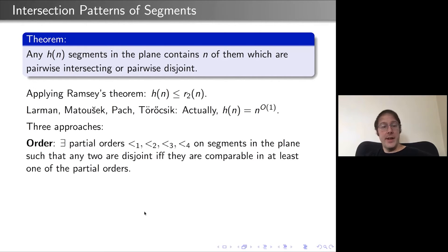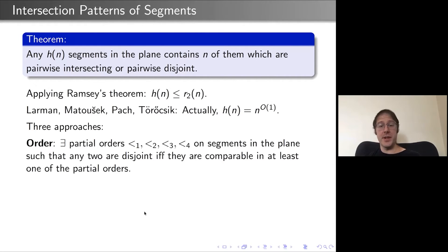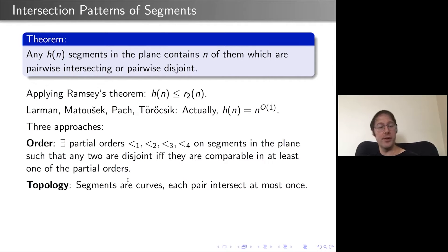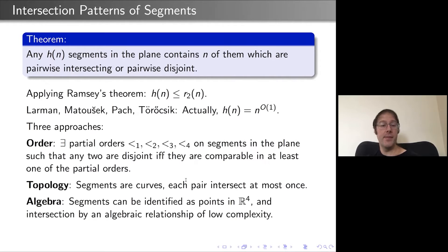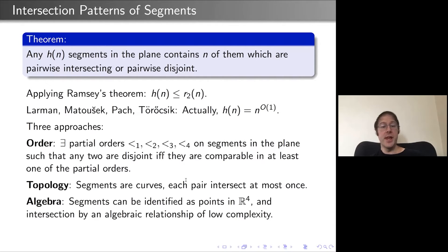There are several ways to show this result. One way, how Larman et al. proved it, is that there exist four partial orders on segments in the plane such that any two segments are disjoint if and only if they are comparable in at least one of the four partial orders. Applying Dilworth's theorem four times gives the result. Another way: segments are curves and each pair intersects at most once. Yet another: segments can be identified as points in R^4 via their two endpoints, and intersection is an algebraic relation of low complexity.